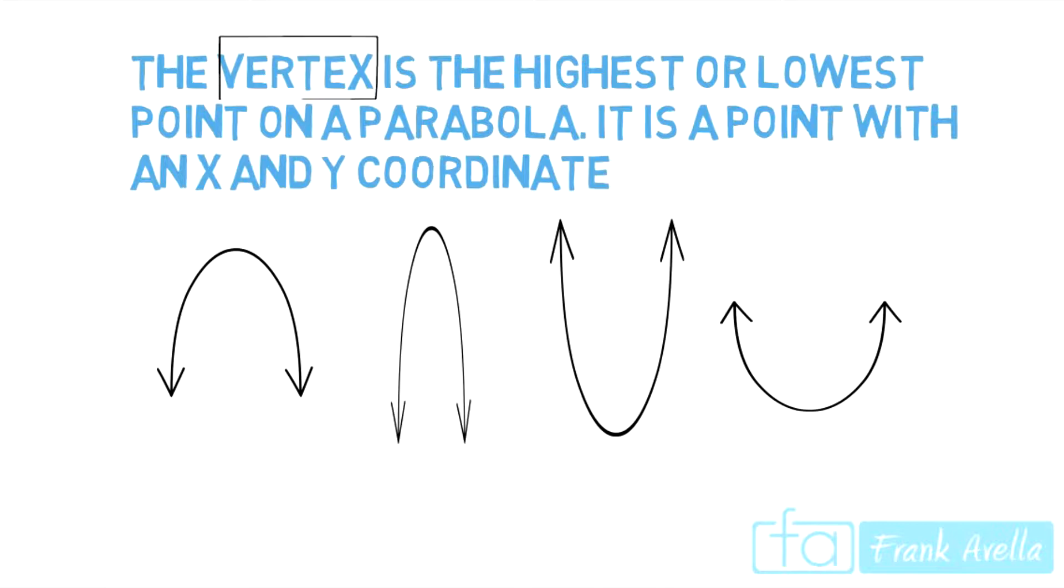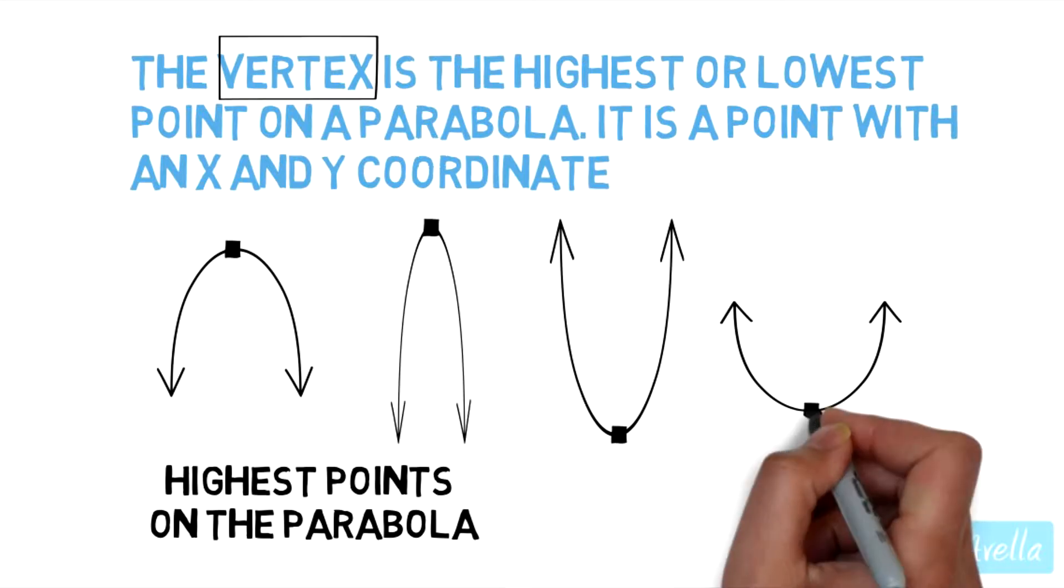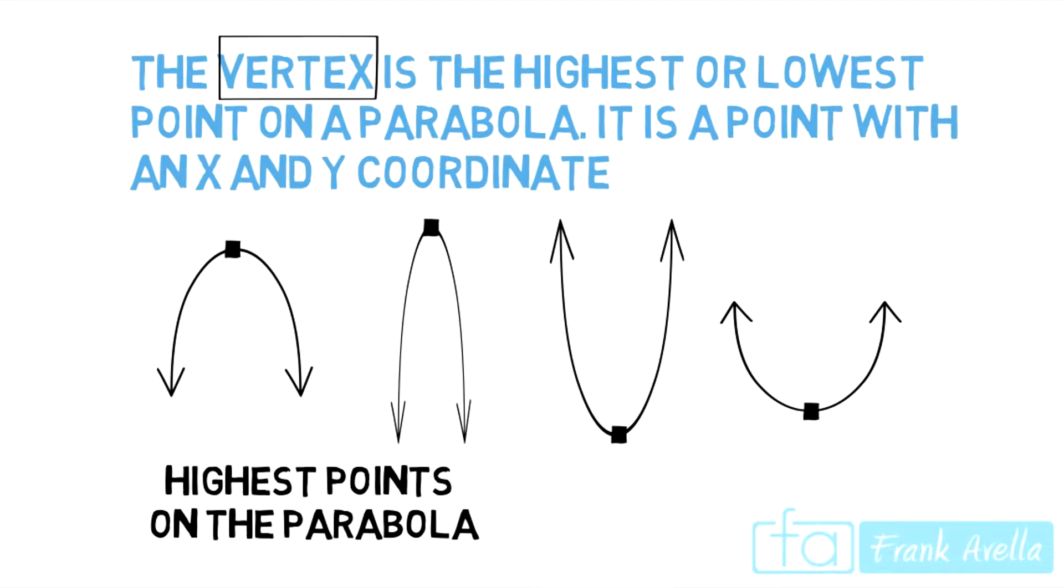Again we're looking for the vertex, the highest or lowest point. Right now I'm going to shade in the vertex on all these parabolas. Looking at the first two parabolas you see that the highest point is the vertex. And on the next two parabolas we have the lowest point.